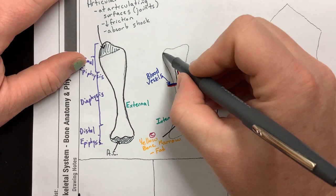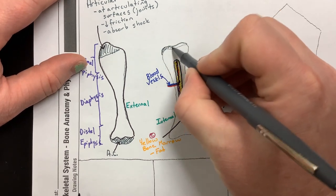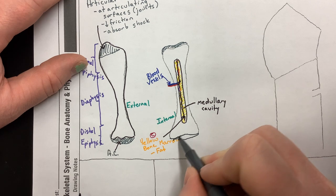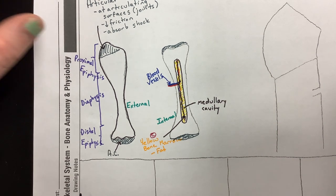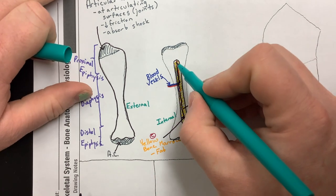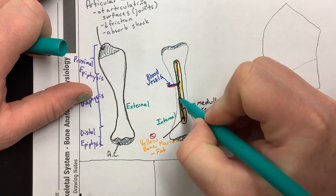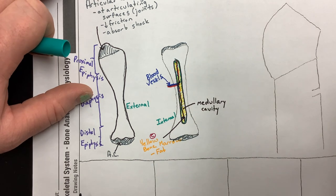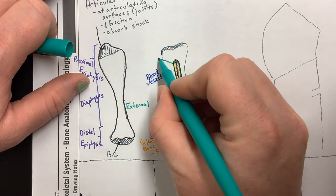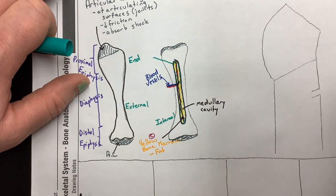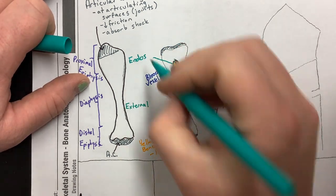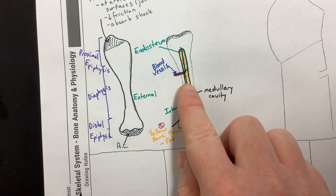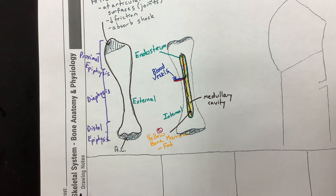There is articular cartilage on both the proximal and distal epiphyses. Inside the medullary cavity there is a lining called the endosteum — 'endo' meaning inside and 'os' meaning bone. The endosteum is a connective tissue layer on the inside of bone.